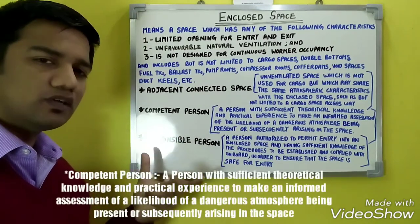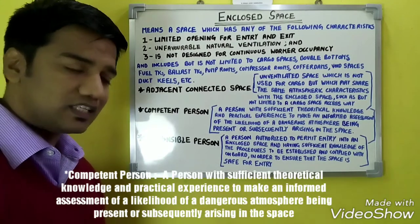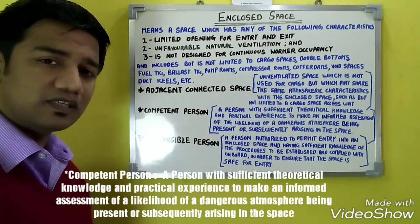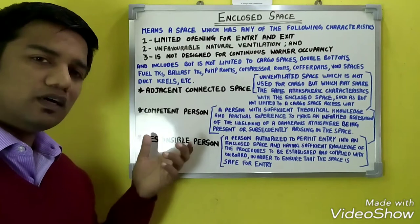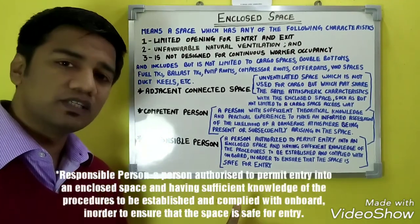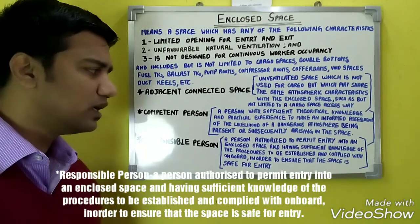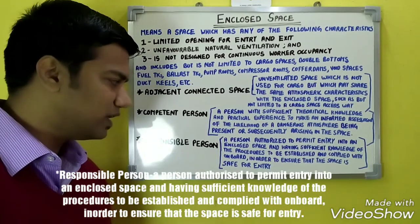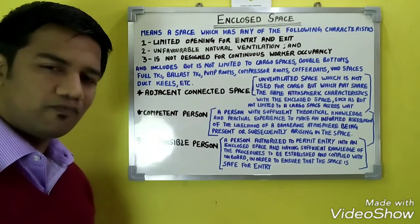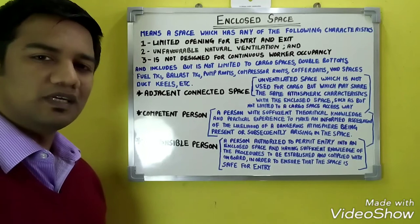The next definition is of a competent person — a person with sufficient theoretical knowledge and practical experience to make an informed assessment of the likelihood of a dangerous atmosphere being present or arising in the space. Usually a competent person includes all officers or the top four rank officers. A responsible person is a person authorized to permit entry into an enclosed space — usually the master — who has sufficient knowledge of the procedures to ensure the space is safe for entry.